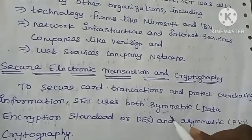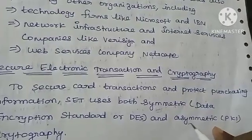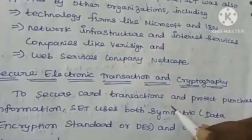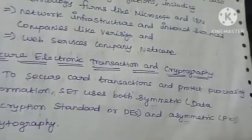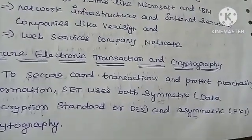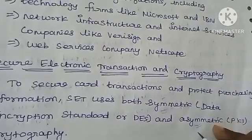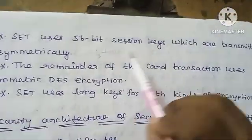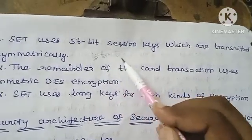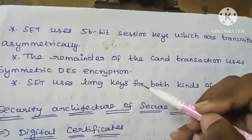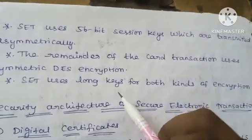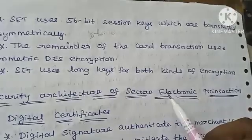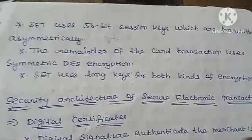SET uses two encryption types: symmetric and asymmetric. Symmetric encryption uses only one key for both encryption and decryption. Asymmetric encryption uses two keys — one for encryption and another for decryption. SET protocols use 56-bit session keys transmitted asymmetrically, while another bit size is used for symmetric DES encryption. SET uses long keys for both types of encryption and decryption.